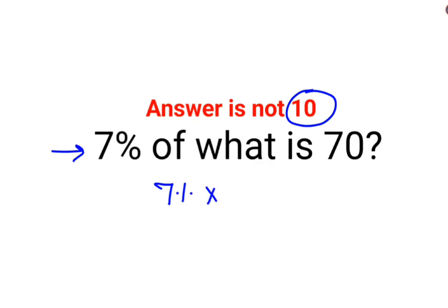7% of means multiplication. What, let it be x. Is means equals, so we have 7% of x equals 70.